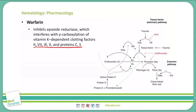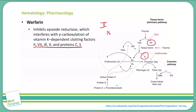This picture does exclude the intrinsic pathway, which will affect factors 2 and 9 as far as our coagulation cascade goes, but warfarin does have an effect on factors 7, 10, protein C, and protein S.